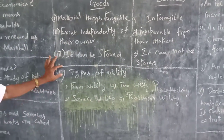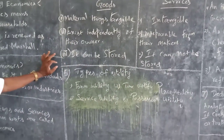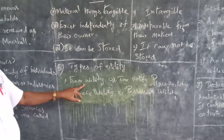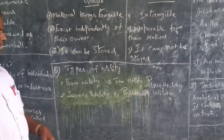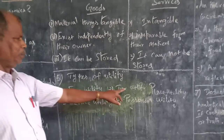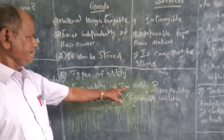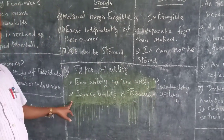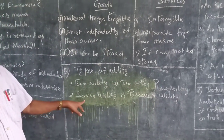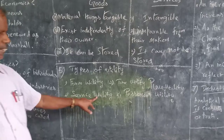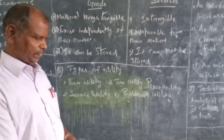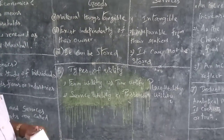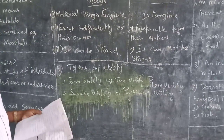There are four types of utility. First is form utility. Second is time utility. Third is place utility. Fourth is service utility, also called possessive utility. First: form utility.